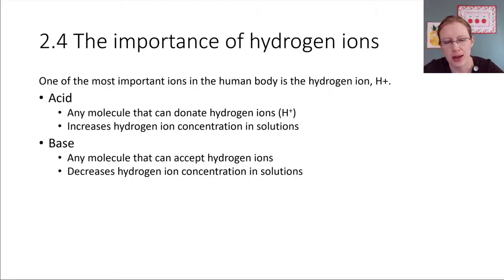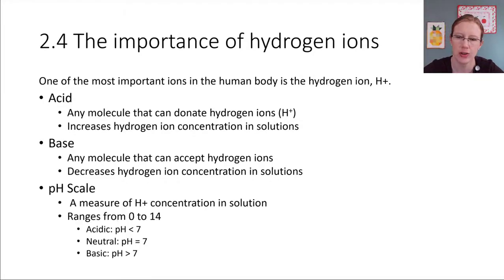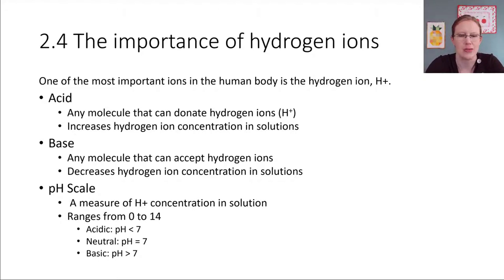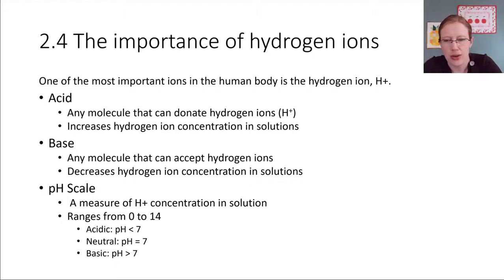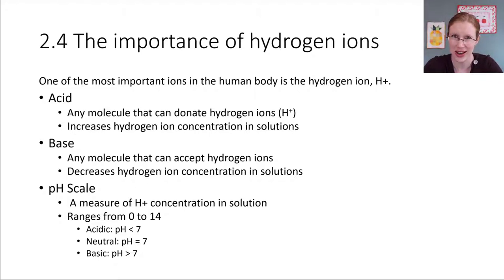The way this ability is measured is on a pH scale. If you've ever heard of the pH of a solution, what is that actually measuring? It's measuring this ability to donate or accept hydrogen ions. pH can be measured by measuring how many protons — how many hydrogen ions — are present in a solution, and that gives us an indication of the pH.